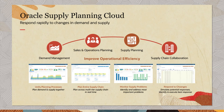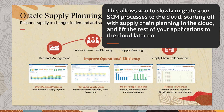Oracle Supply Planning Cloud can plan supply for facilities that are still running on on-premise ERP and other SCM solutions. This allows you to slowly migrate your SCM processes to the cloud, starting off with Supply Chain Planning in the cloud, and lift the rest of your applications to the cloud later on.